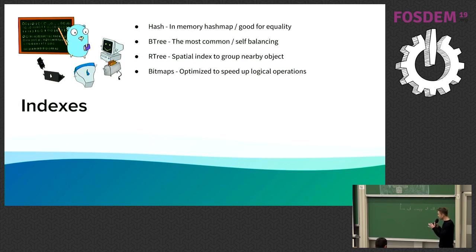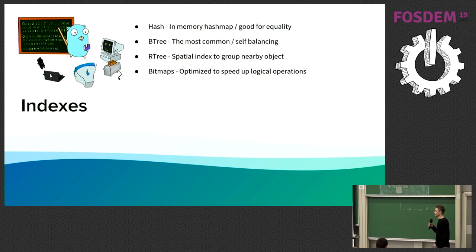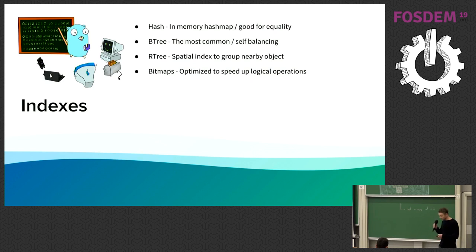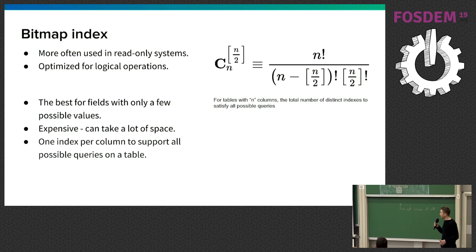A little theory about indexes: hash indexes work like hash maps — very good for equality. The most popular indexes in databases are B-trees, which are self-balanced trees and a great general choice. R-trees are less popular and are better for indexing multi-dimensional objects — good for grouping nearby objects. And bitmaps are very good for optimizing logical operations. This is what we chose for GitBase.